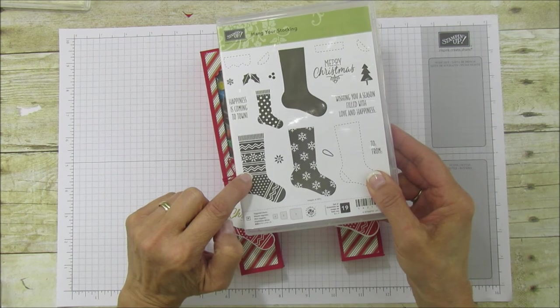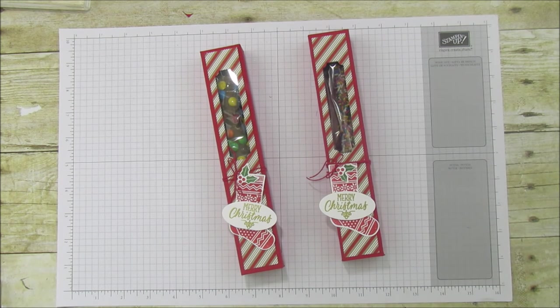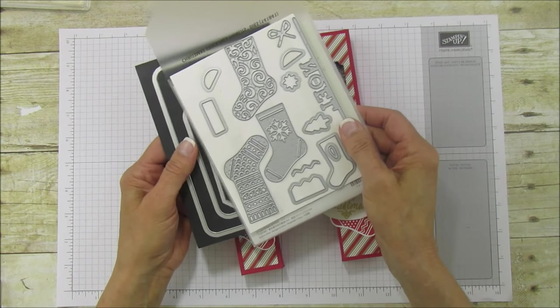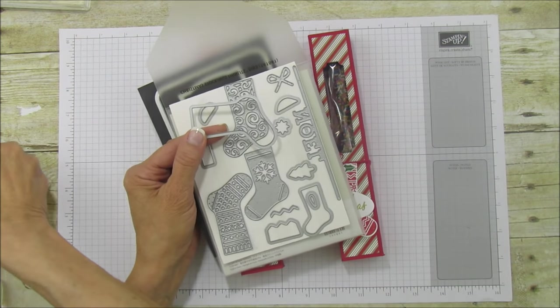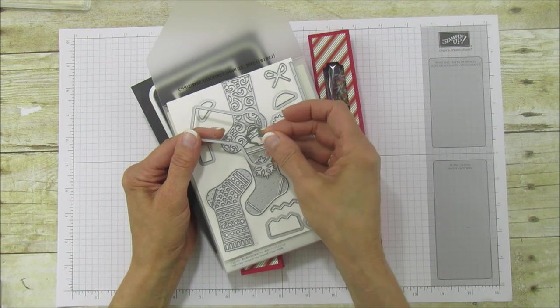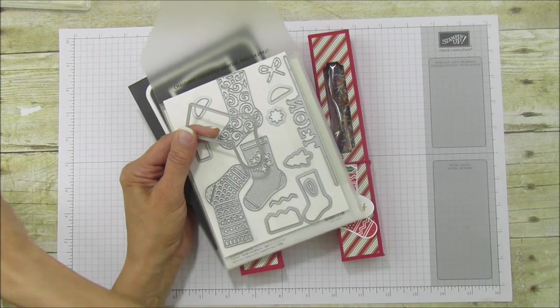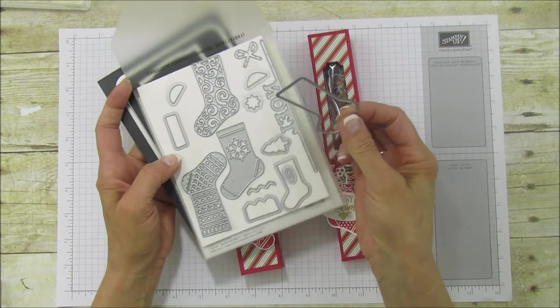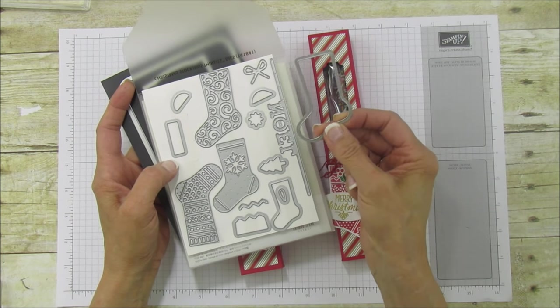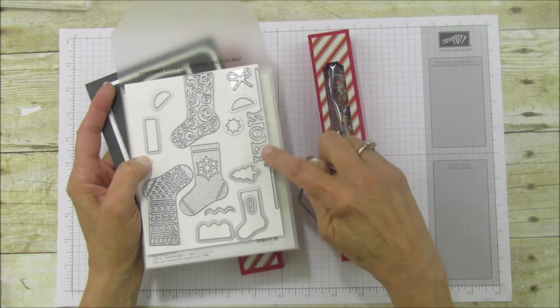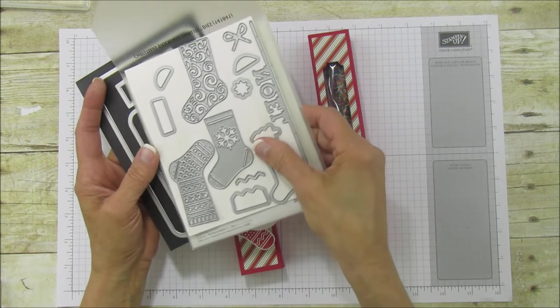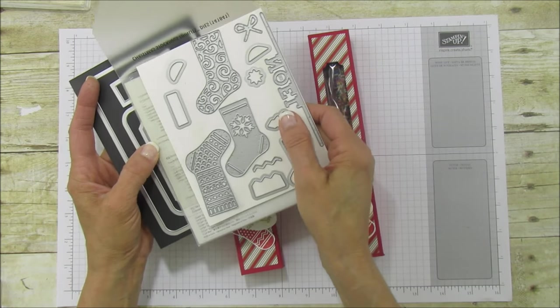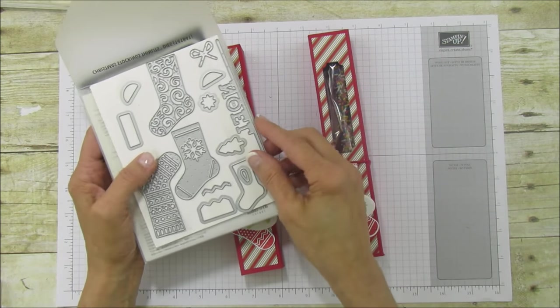It has coordinating framelits. If you buy it as a bundle you get 10% off. These are the framelits and I already have the framelits out that we're going to use. It even has the holly and berry framelits and this is a solid one. It also has this little noel border. There's 17 pieces in this set.